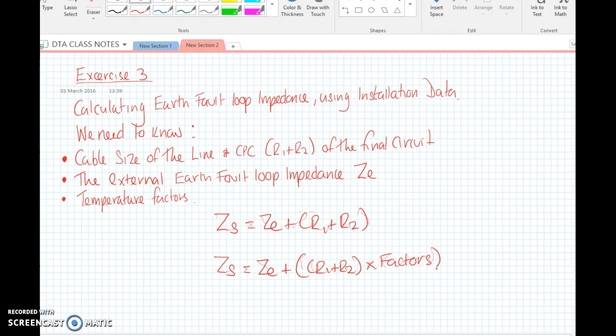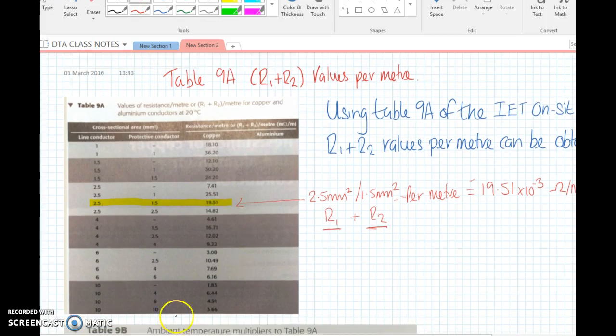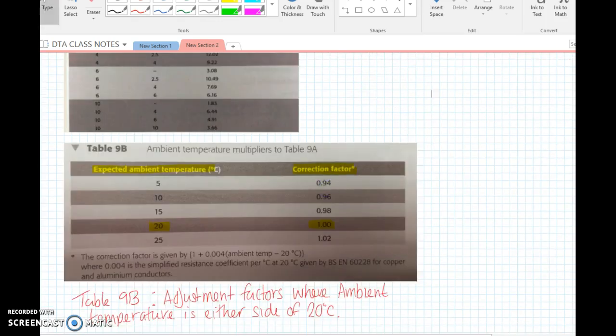This is table 9a of the on-site guide. On this left column we have our line conductor R1, so a 1mm on its own per meter is 18.1 milliohms per meter. Then we have a protective conductor, so we've got R1 and R2, going all the way down to 50mm.